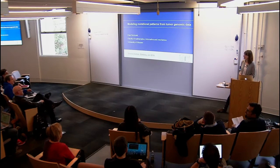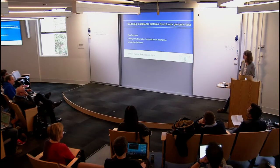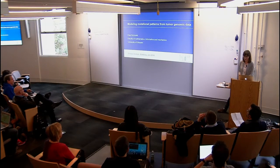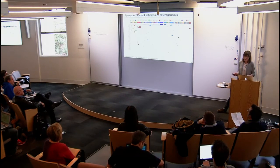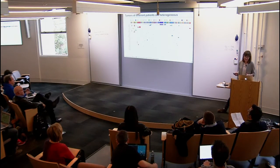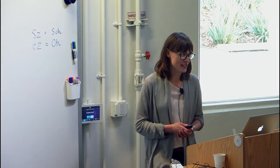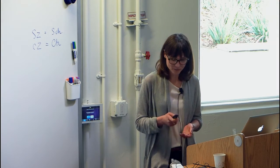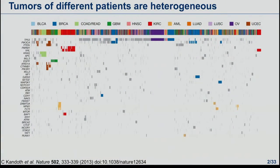I'll be talking about modeling mutational patterns from tumor genomic data. Tumors of different patients are heterogeneous. Here you see a matrix where rows are genes and columns are patients from different cancers, and the different cancers are indicated by colors.